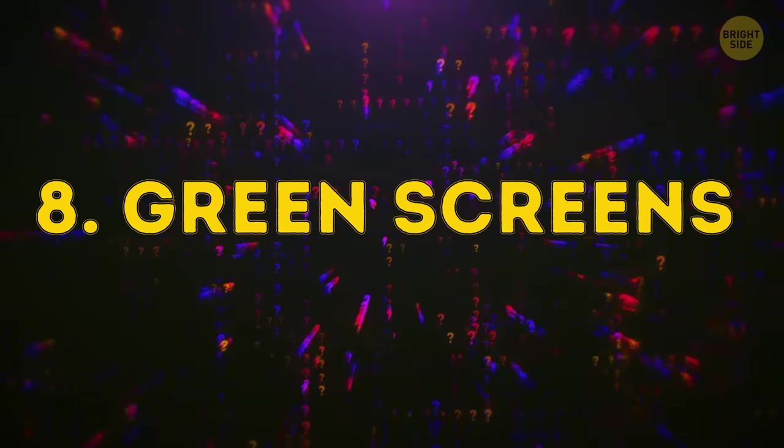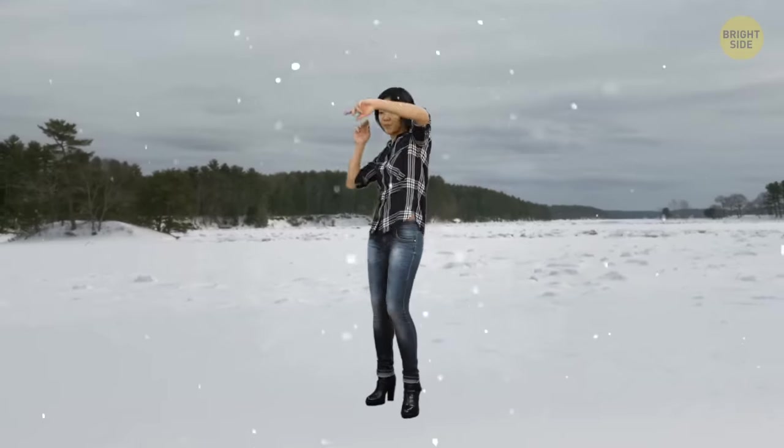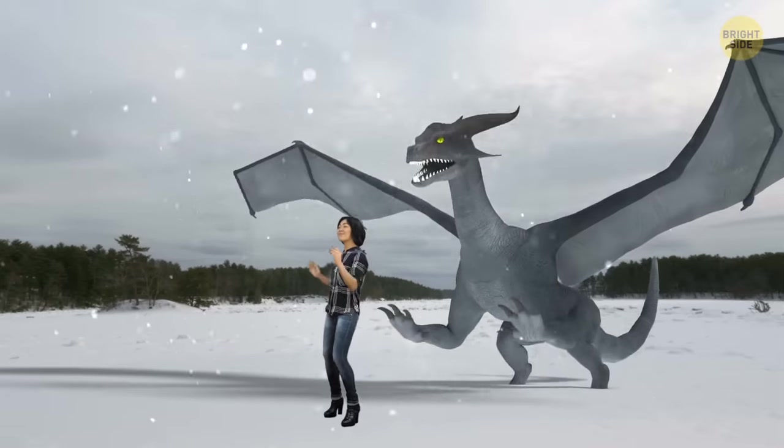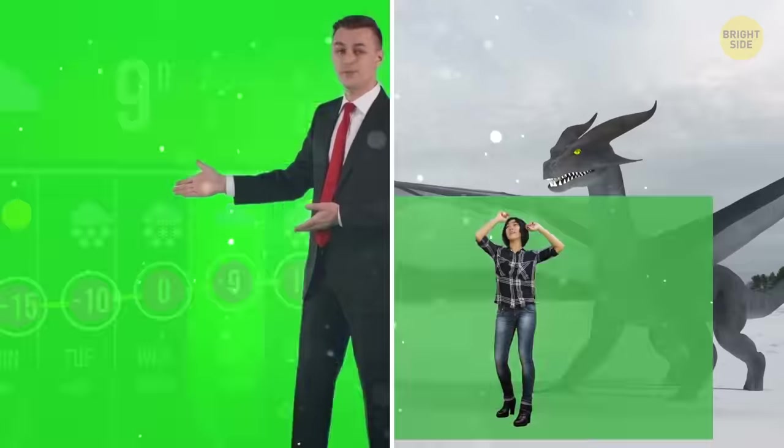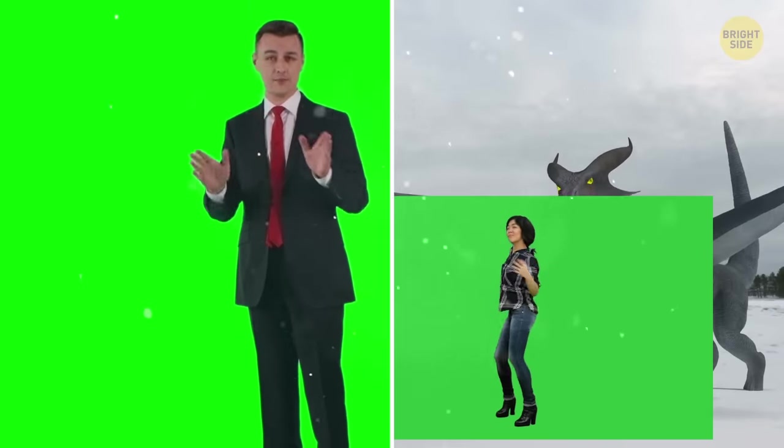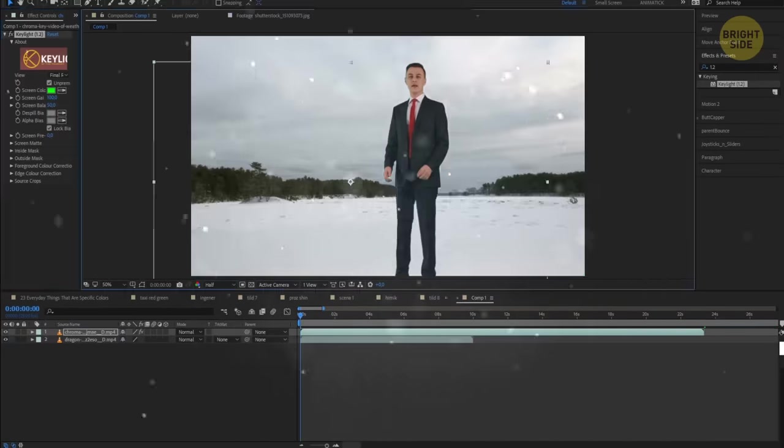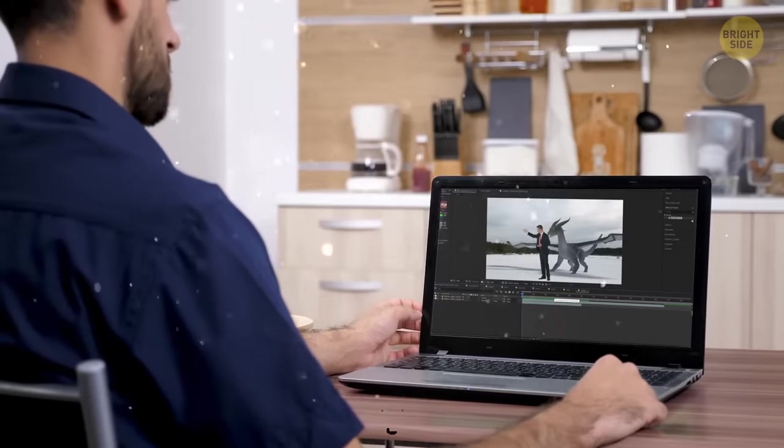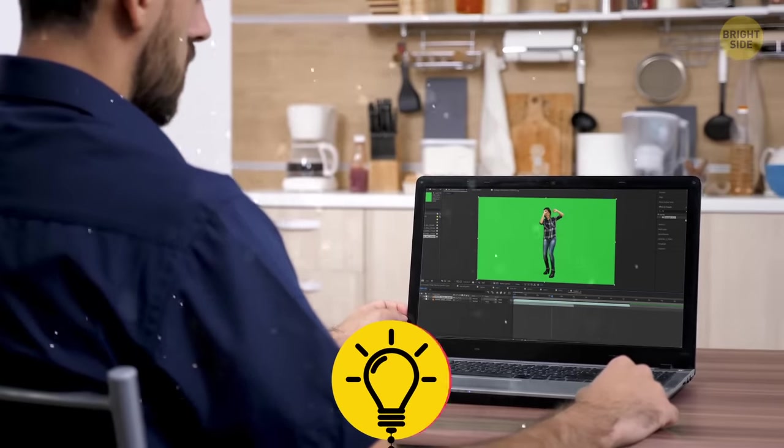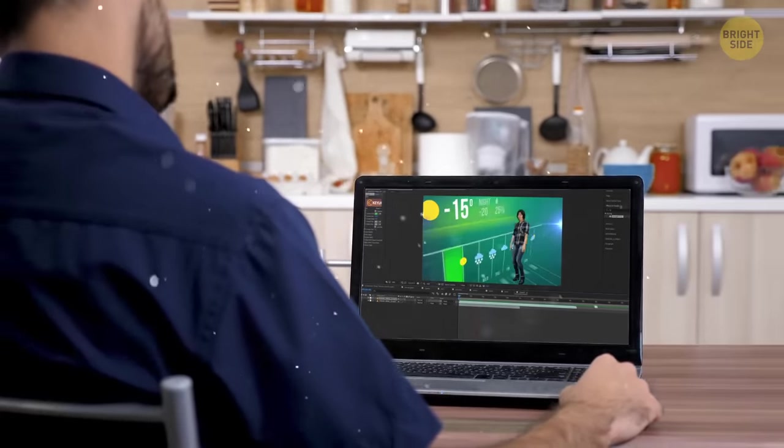Green Screens. That weatherman standing in front of his moving storm diagram and the princess dancing with her dragon have one thing in common. They're usually not wearing green. This is because they're performing in front of a green screen. Using a technique called chroma keying, technicians cut away the green behind them and layer the princess or weatherman over the image of a dragon or storm, just as you might place a paper doll over a painting.